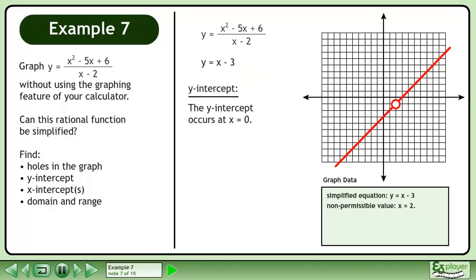Now we'll find the y-intercept. The y-intercept occurs at x equals 0. Plug in 0 for x. This gives us y equals negative 3.